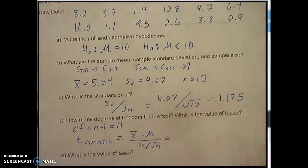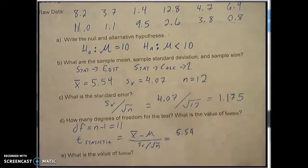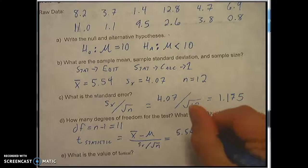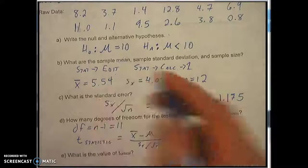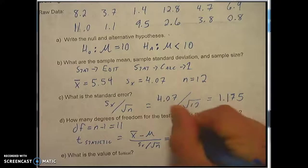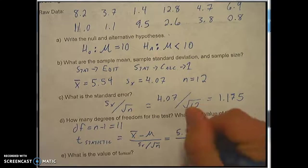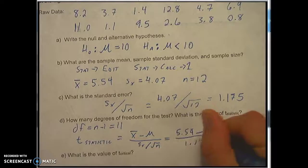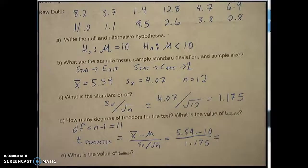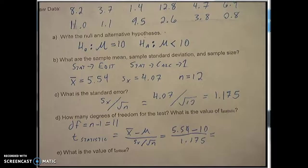So for us it's 5.54 minus mu from our hypothesis is 10 divided by our standard error which is 1.175. And I'm just going to type that in the calculator 5.54 minus 10 divided by 1.175.